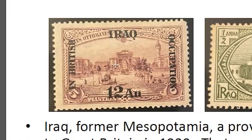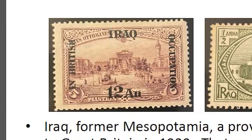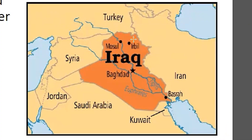Going back to the first one - this stamp was issued before Great Britain had its mandate, when Great Britain occupied Iraq. It says 'British Occupation.' The image is a university in Istanbul. On the top left you can see 'Post Ottoman' because they used some of the stamps from Turkey by the Ottoman Empire.